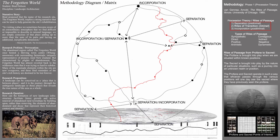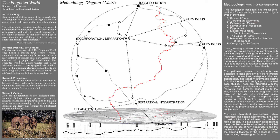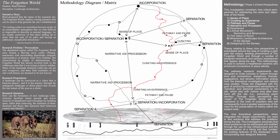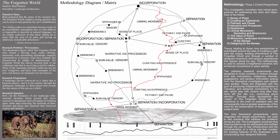Brad began by creating a methodology diagram that articulated points of separation and incorporation on his site, represented by the existing landscape and abandoned man-made features. During the second phase of the investigation, Brad drilled down further and his methodology diagram interrogated van Genep's theory in relation to nine critical landscape perspectives: sense of place, curating experience, pathway and pause, narrative and procession, epiphanies, liminal movement, semiotics and mnemonics, the value of runes, mnemonic landscape architecture of the senses, and designing for the senses.